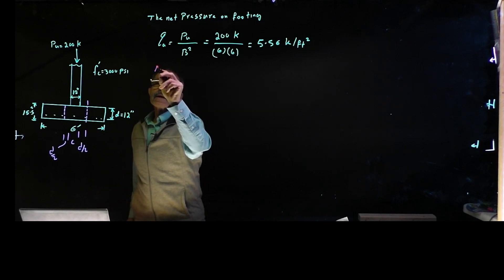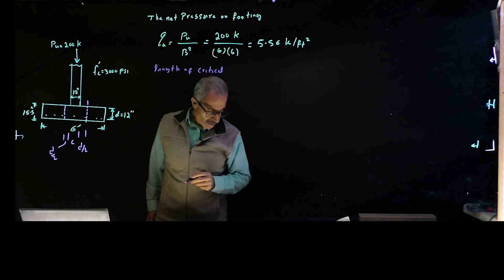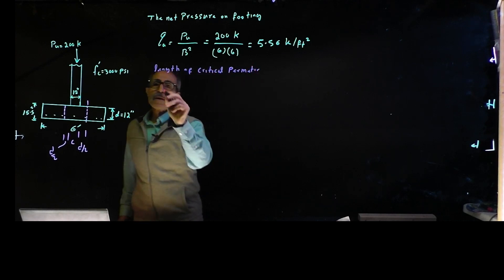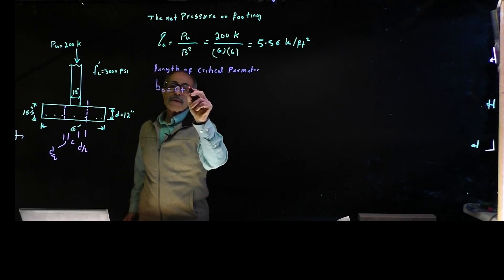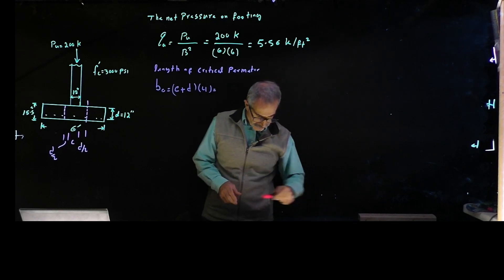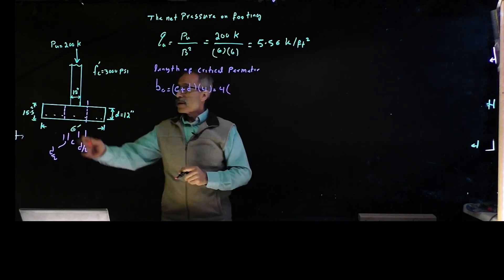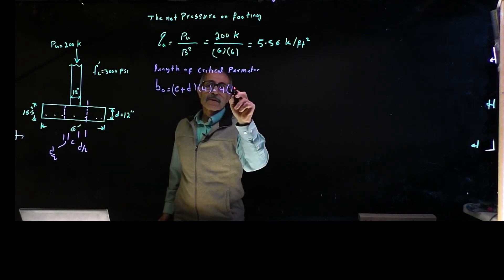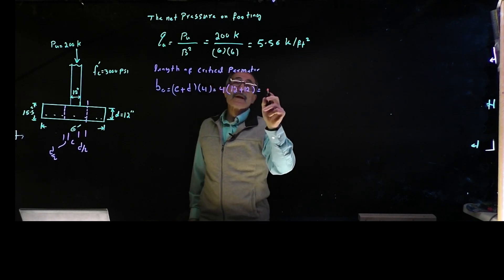The length of the critical perimeter is given by BO, which equals (C plus D) times four — that accounts for all four sides. With C equal to 12 inches and the effective depth D equal to 12 inches, that's 12 plus 12 equals 24 inches. 24 inches times 4 gives us 96 inches, or 8 feet.